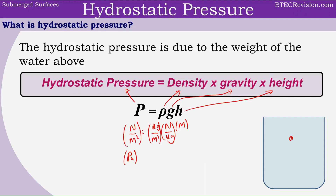Now let's take an object and submerge it in a beaker of water. It has a height h from the surface level of the water. The density of the water is rho, and gravity we know is 9.8 newtons per kilogram. This object is going to experience a hydrostatic pressure according to this equation: the density of water multiplied by gravity, which is 9.8, times the height that it is submerged.